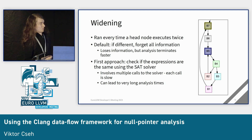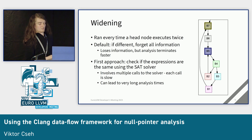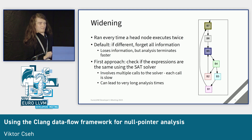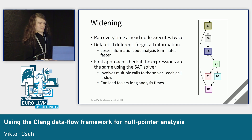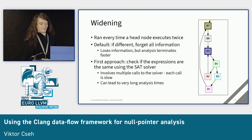Our first approach was to keep all the information — check if the expressions are the same, and if not, skip the new expression with a tiny bit of simplification. But this involved multiple calls to the boolean constraint solver, which is the slow part, and each call was slow, leading to very long analysis times.